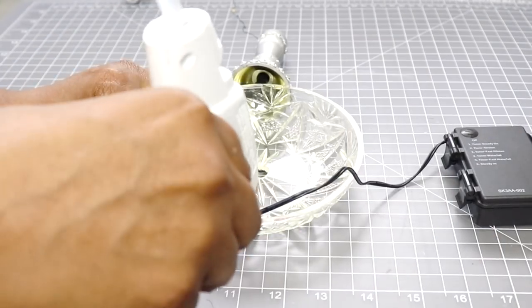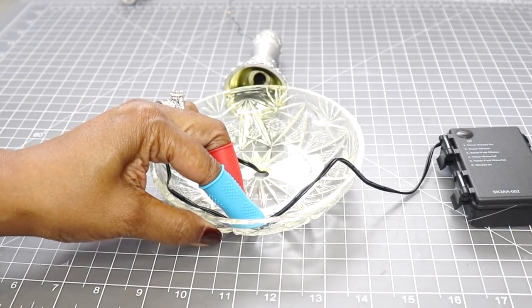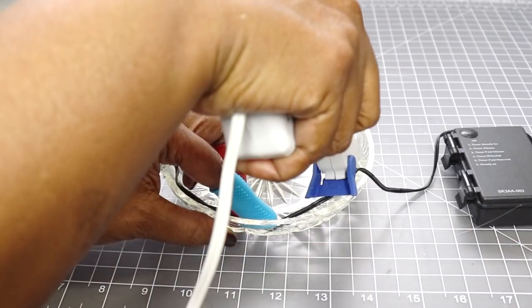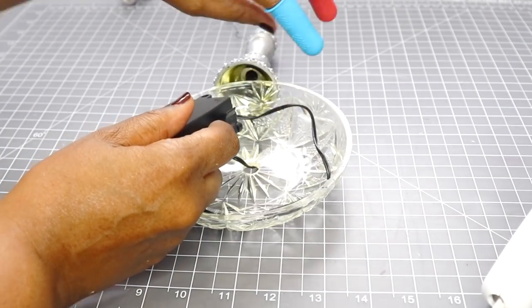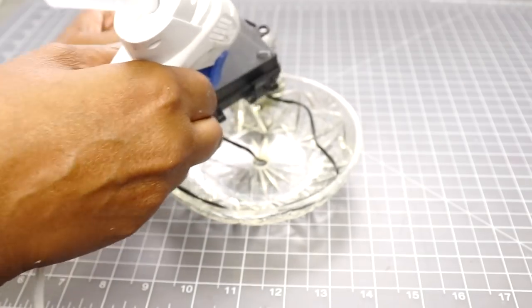And so what I'm doing now is just hot gluing the wire down into place. So right here I'm just making sure that the battery box is hot glued in the right position where I can utilize the on and off switch.